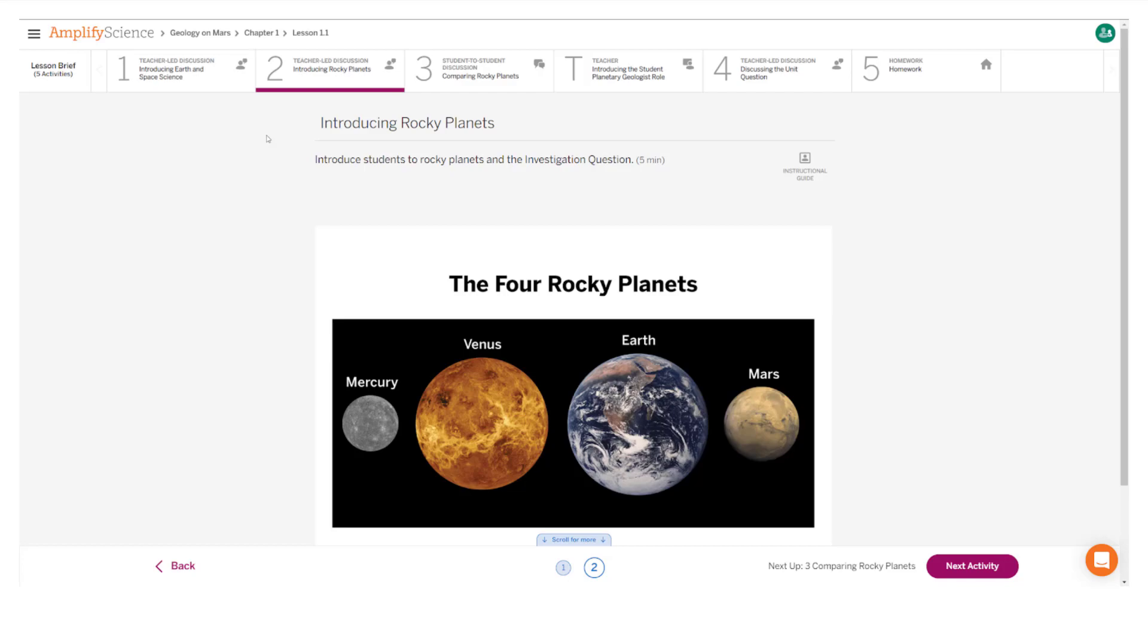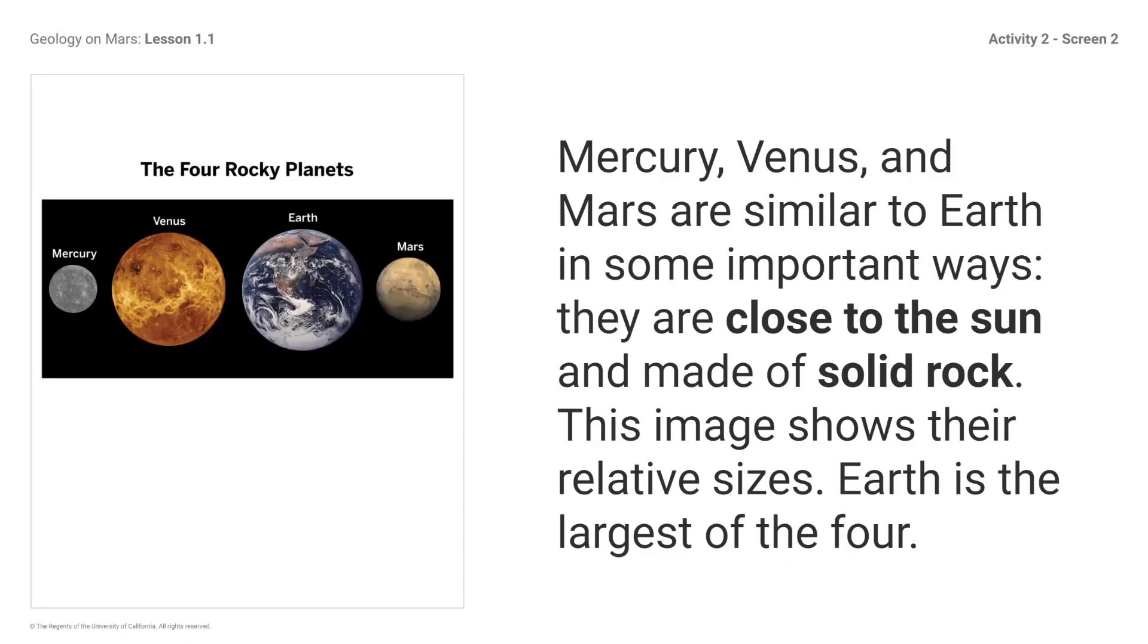Here's what your student screen looks like for this part of the lesson. Mercury, Venus, and Mars are similar to Earth in some important ways. They are close to the sun and made of solid rock. This image shows their relative sizes. Earth is the largest of the four.